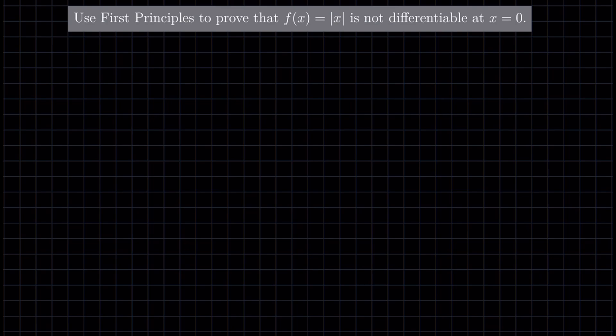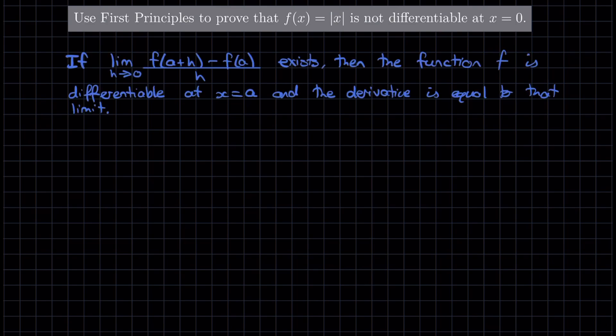So let's recall what it means for a function to be differentiable at a point. We say, if the limit as h approaches 0 of f(a+h) - f(a) all over h exists, then the function f is differentiable at x equal to a, and the derivative is equal to that limit.